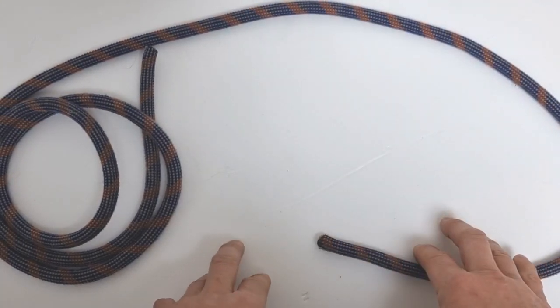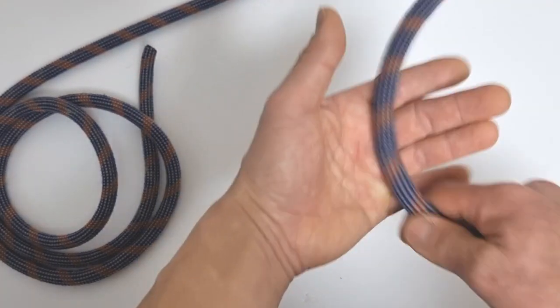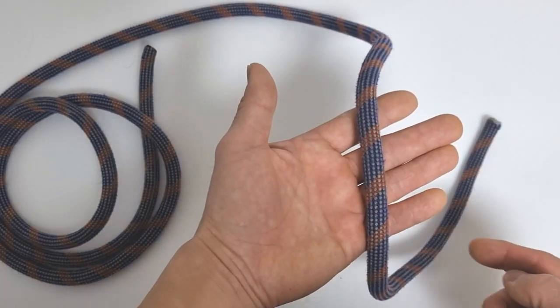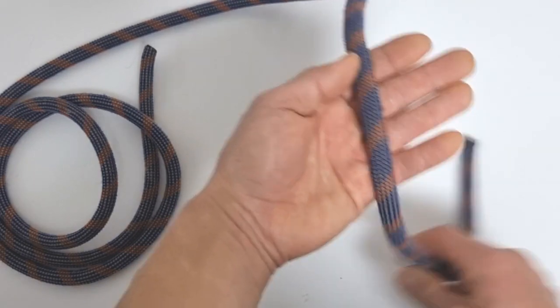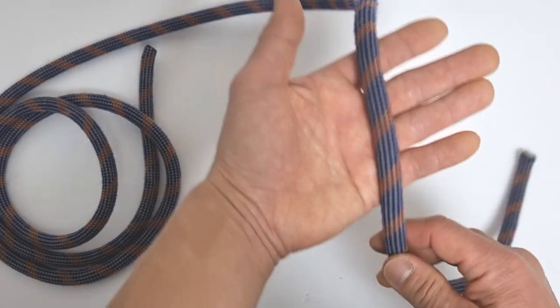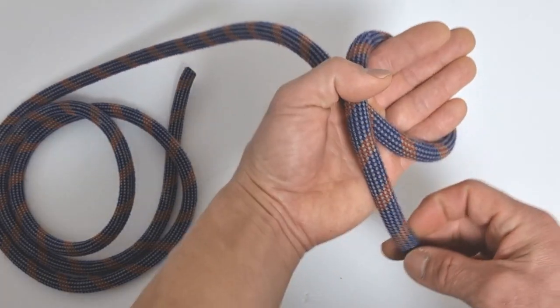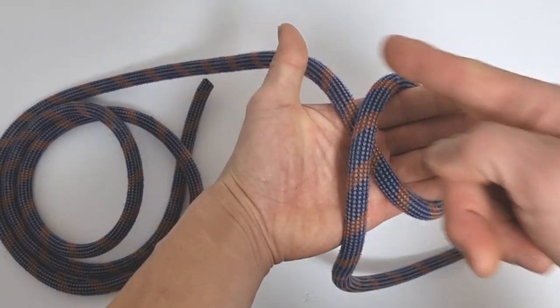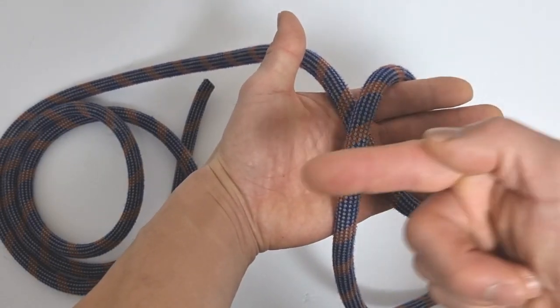Okay, so here we go. Step one: take the working end and put it in your hand like this. So the standing end is up here and the working end is down here. Then you're going to wrap your hand once like that. You want to make this X, and you want the working end to go this way.